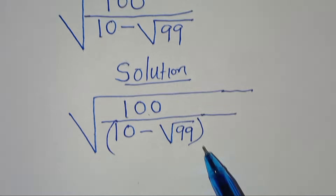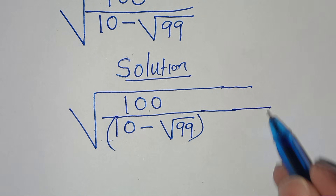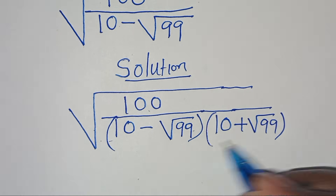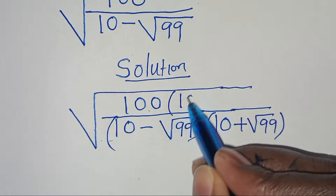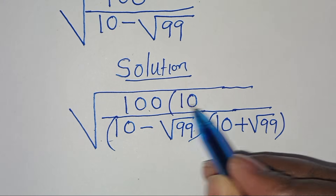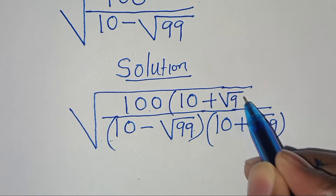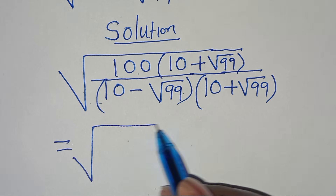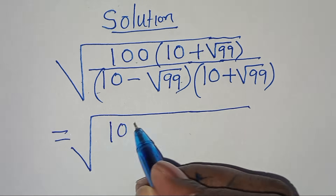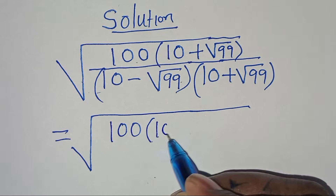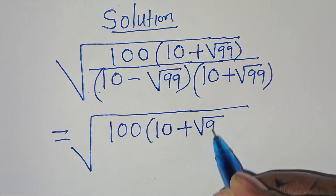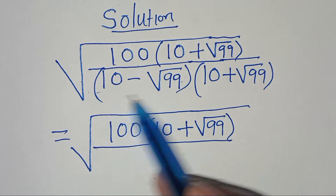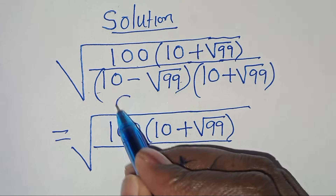The first step is to rationalize the denominator by introducing a conjugate, which is 10 plus square root of 99. We also multiply this conjugate with the numerator, giving us square root of 100 times 10 plus square root of 99, divided by 10 minus square root of 99 multiplied by 10 plus square root of 99.